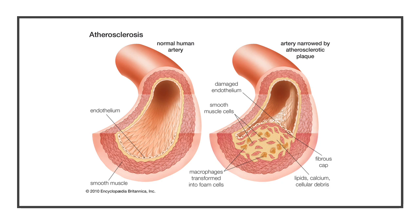Looking at this diagram, a healthy vessel has the endothelium on the outside, smooth muscles forming the media, and the adventitia forming the outer layer. In an intracranial vessel, there is an internal elastic lamina but no external elastic lamina. In disease, the vessel becomes laden with fat, the endothelium is damaged, smooth muscles migrate, macrophages transform into foam cells, developing a fibrous cap, with deposition of lipids, calcium, and cellular debris on top.